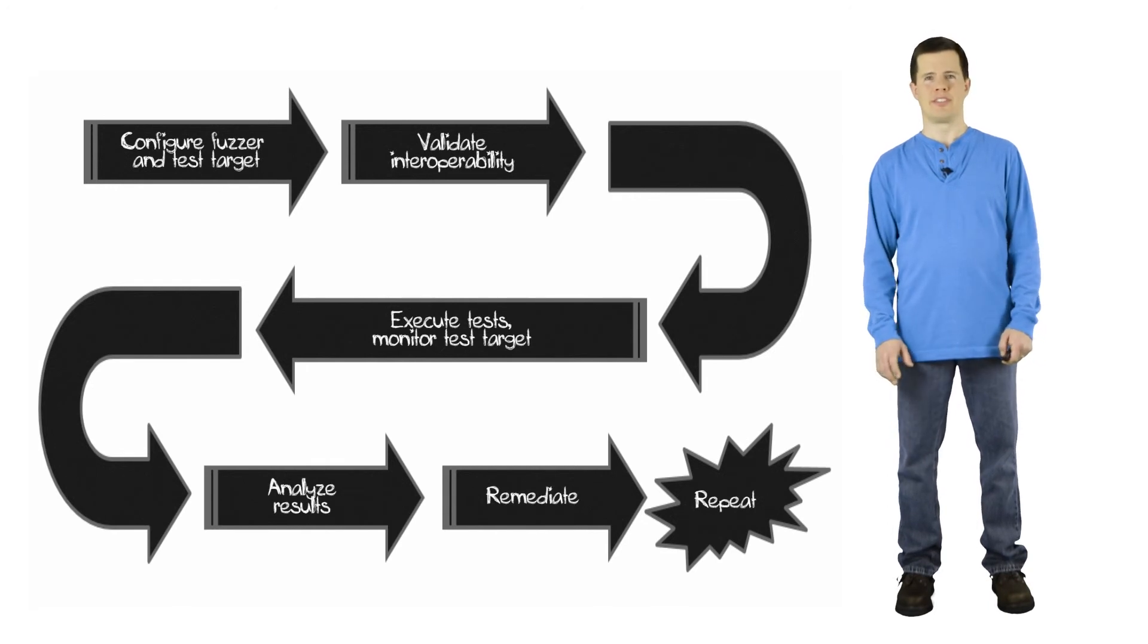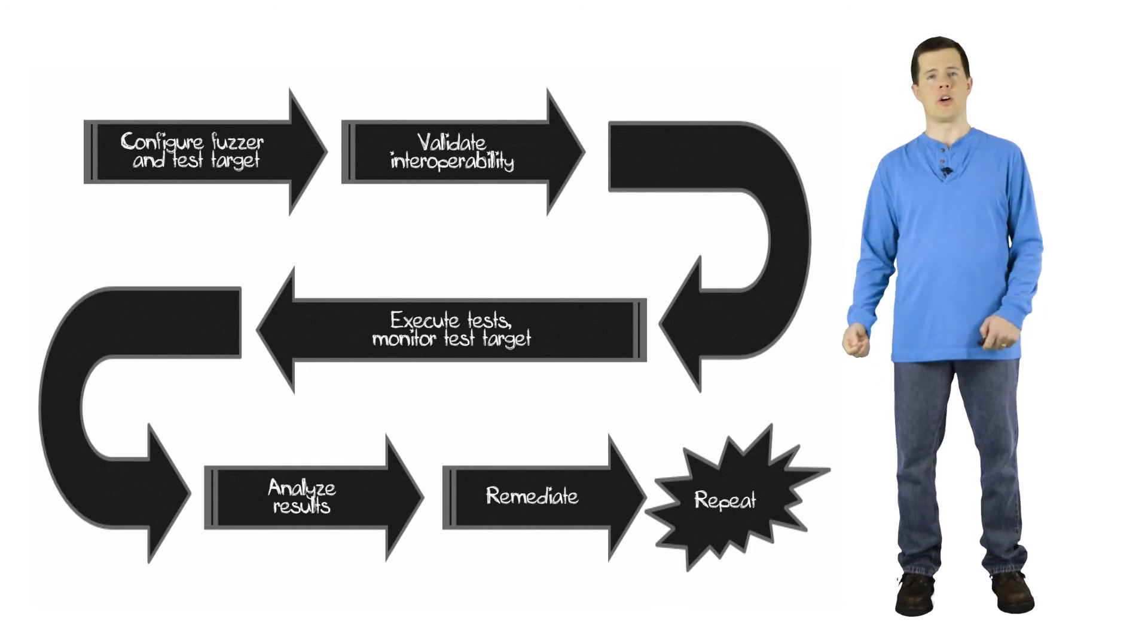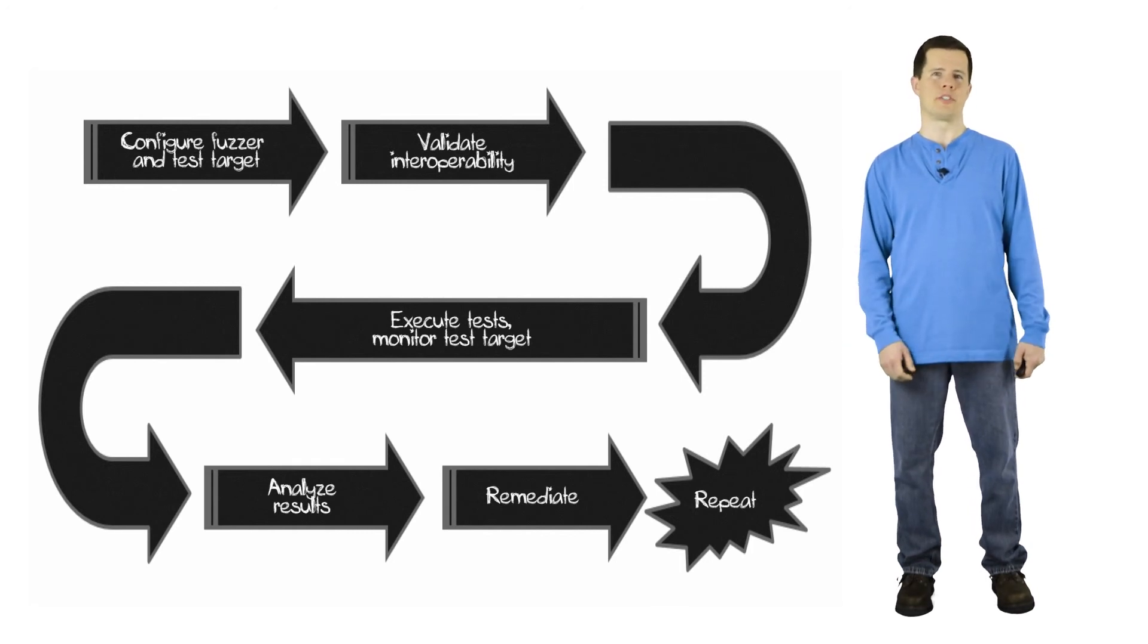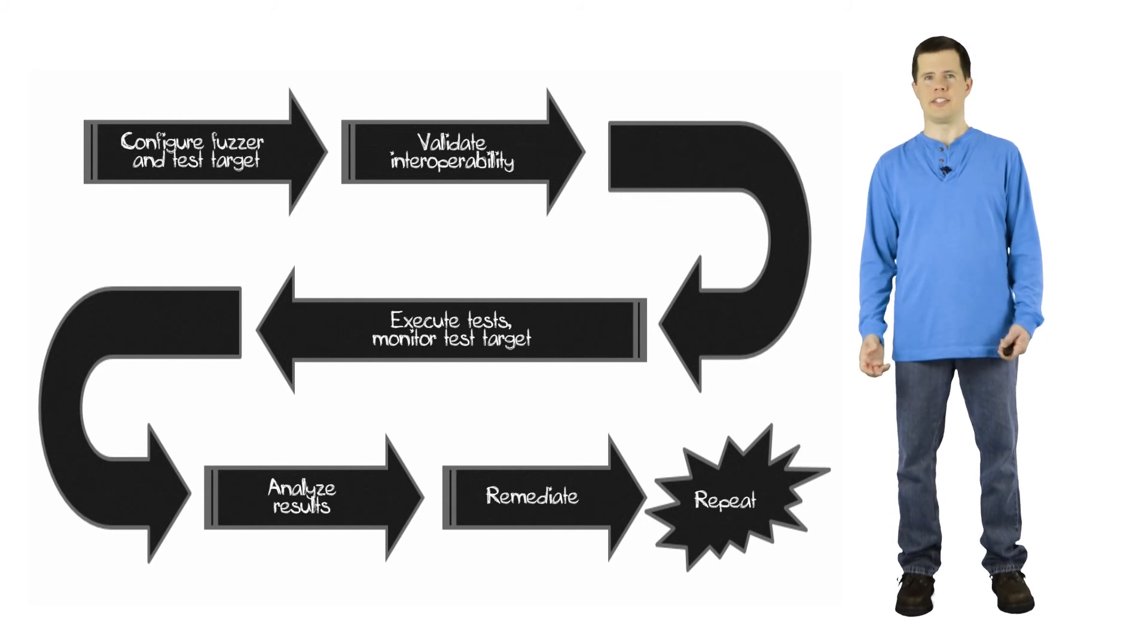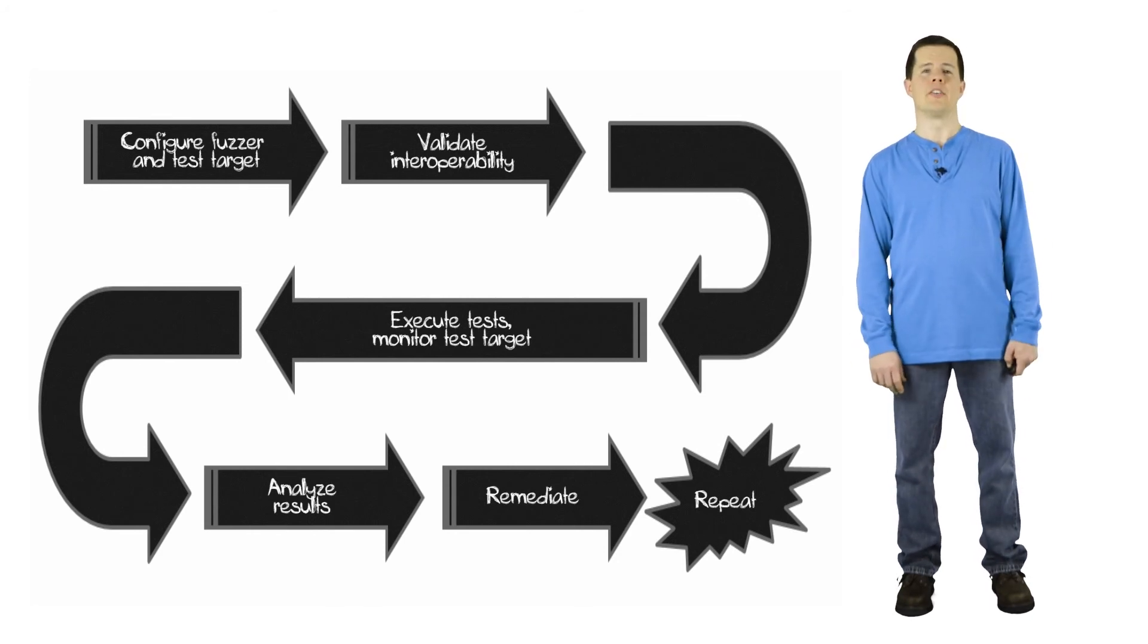The second step is critically important. This is interoperability testing, and what you're doing here is no fuzzing. You're just sending valid messages from the fuzzer to the target and looking for valid responses. So you're really just checking to see that everything's hooked up correctly and that you can communicate effectively between the fuzzer and the target. And if that succeeds, then you move on, and it's pretty much standard QA from there on out.